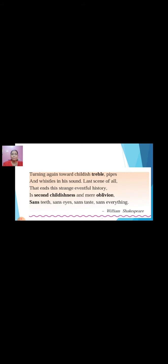That is why it is called second childishness. Sans means without. Sans teeth — as you age your teeth start falling out. Sans eyes — your eyesight weakens, your vision gets worse. Sans taste — you lose taste for certain things. Sans everything — you need support and help from everybody around you to do the needful.